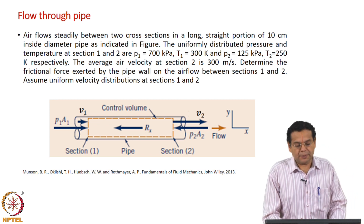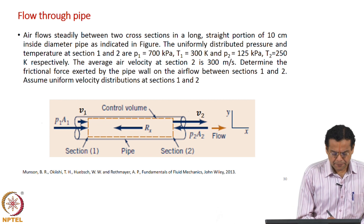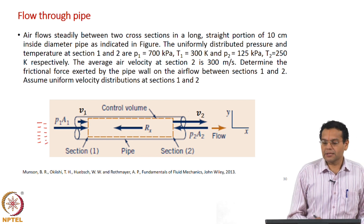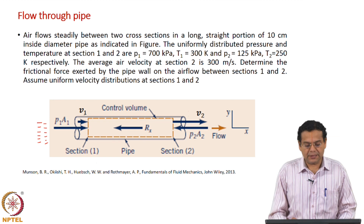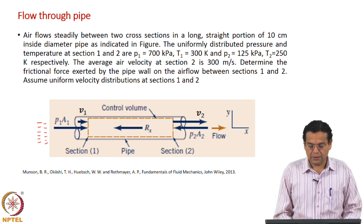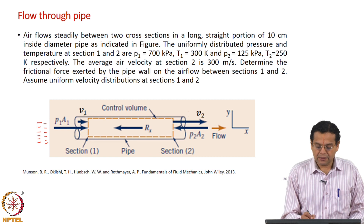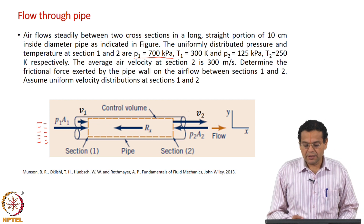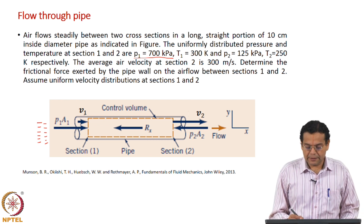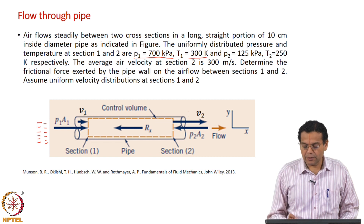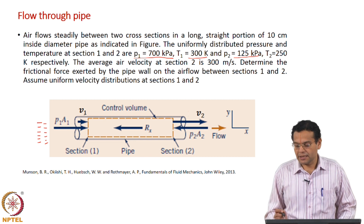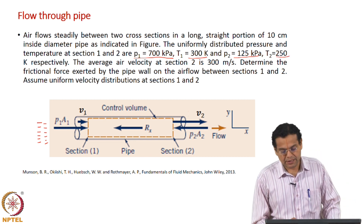The uniformly distributed pressure and temperature means that at the inlet the pressure distribution is uniform and temperature is also uniform along the cross section, and similarly at the outlet. At section 1, P1 is 700 kilo Pascal — roughly about 7 times atmospheric pressure — and temperature roughly about ambient 300 Kelvin. At the exit, pressure is roughly about atmospheric, slightly above that, and temperature is low, less than 0 degrees centigrade.